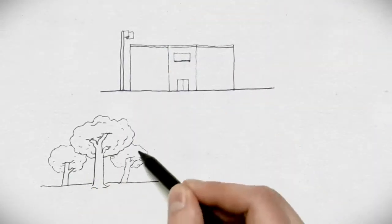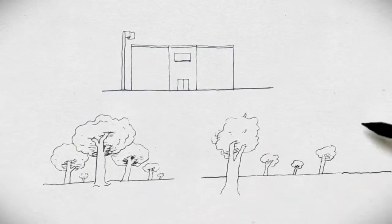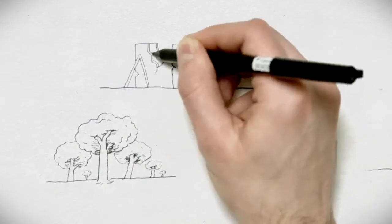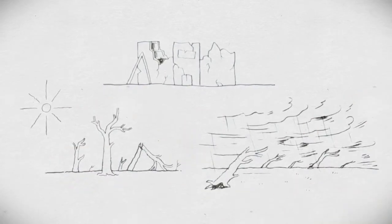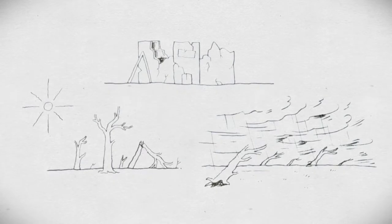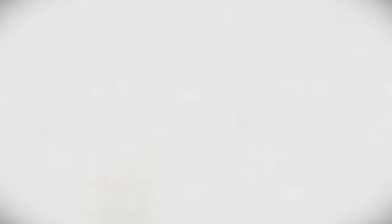Sustainable development can only happen if we reduce these risks. To provide universal education, we need schools that can withstand earthquakes. To achieve zero hunger, we need to protect crops from drought. And to eradicate poverty, we must ensure that jobs and livelihoods can endure disaster.